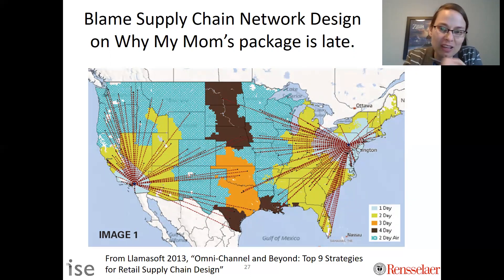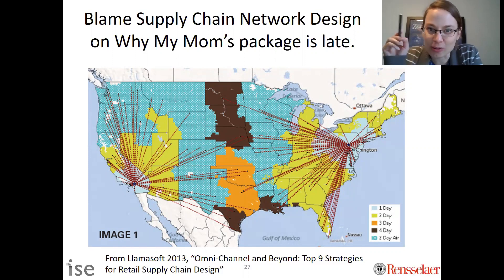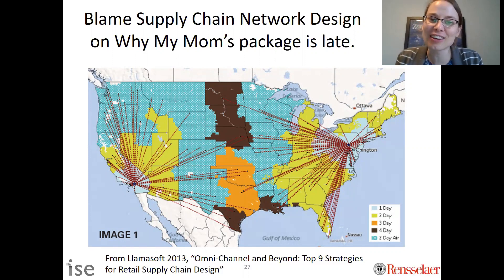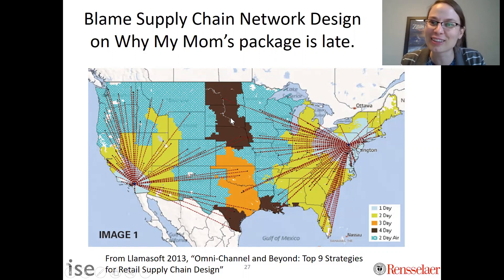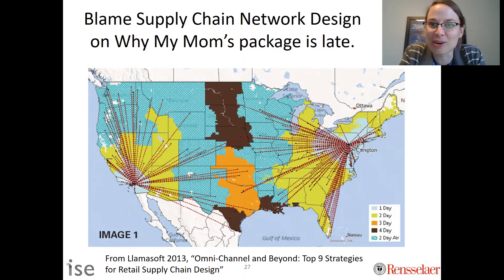If they're a company that says 'I want to make two-day deliveries' — like Amazon — they can also use air, which is the dotted areas. One thing to note is they're not able to reach my parents, who live right in the middle of that brown part, in two days. So when I send my mom something and it's late, you could blame supply chain network design for why her package is late.